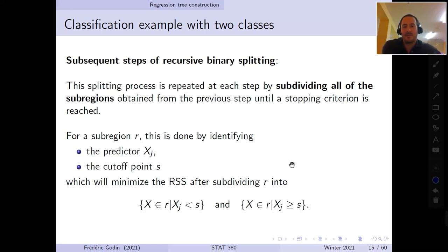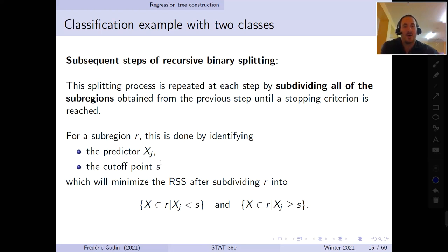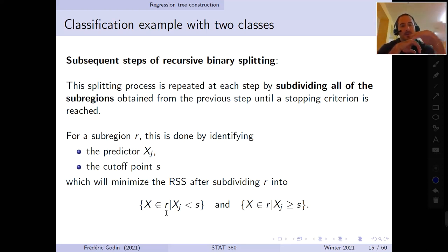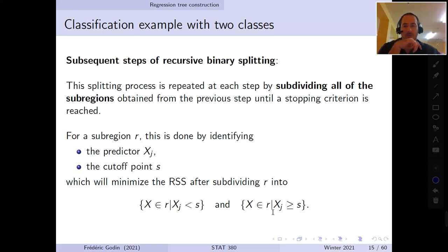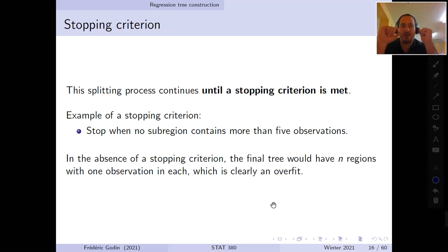Every time we have a sub-region, we identify which predictor xj to split on and what cutoff point s to use. Any sub-region in the tree can be further subdivided into: all points in R for which the jth predictor is smaller than s, and conversely all points for which it's greater than or equal to s. We continue splitting until a stopping criterion is met.